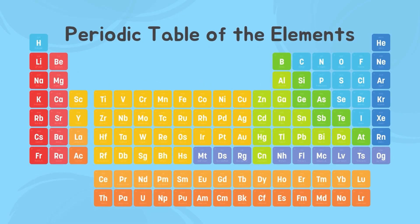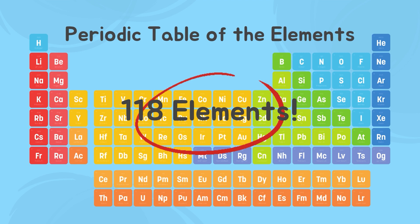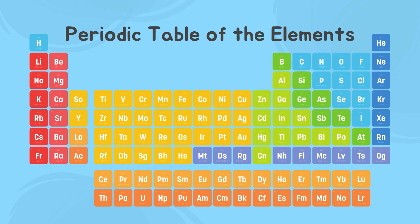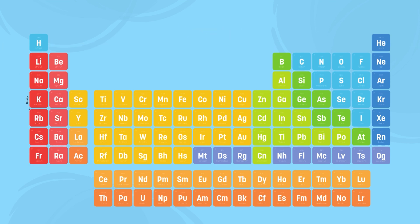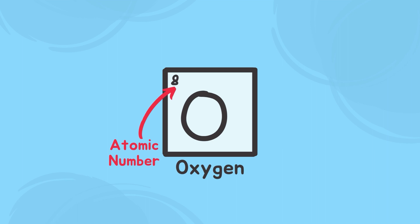Let us move on to elements. There are 118 elements in the world. Scientists created a table to group all 118 elements by similar elements. The periodic table is called periodic since each row in the table is called a period. The sequence of elements is determined by the element's atomic number, which is displayed on the top left of each element. Each element is determined by differences in their atomic structure. The number of neutrons, protons, and electrons are different for each individual element.